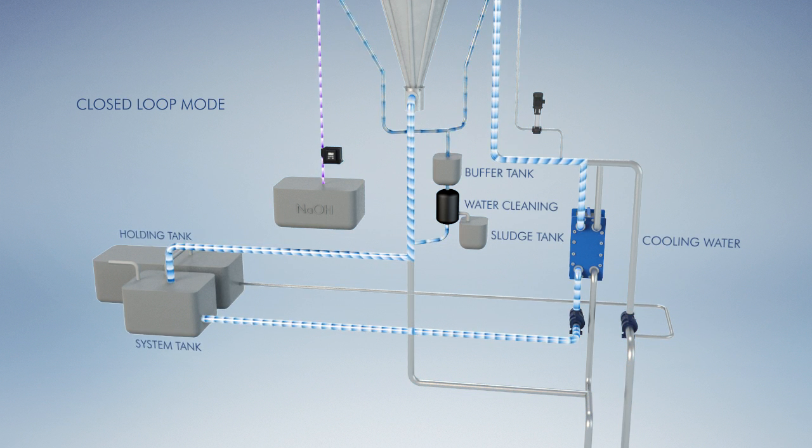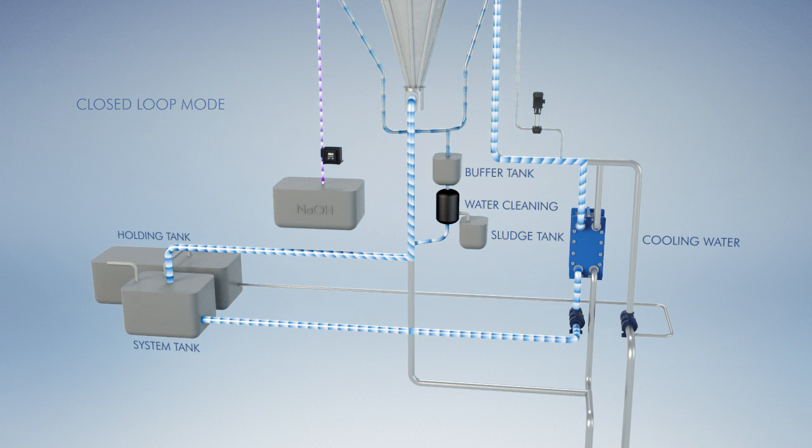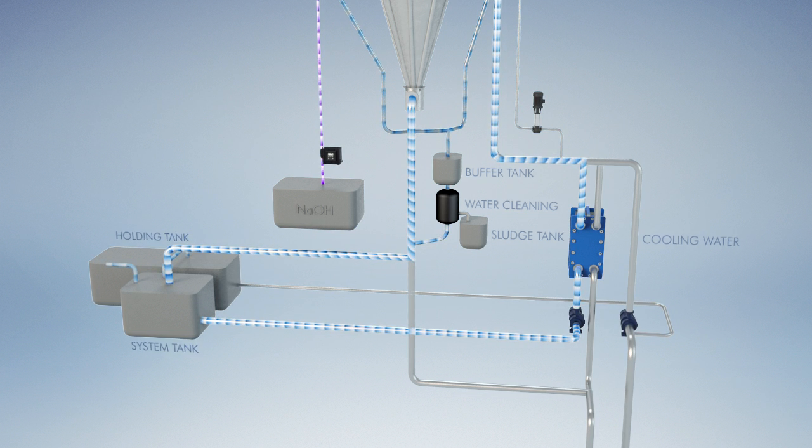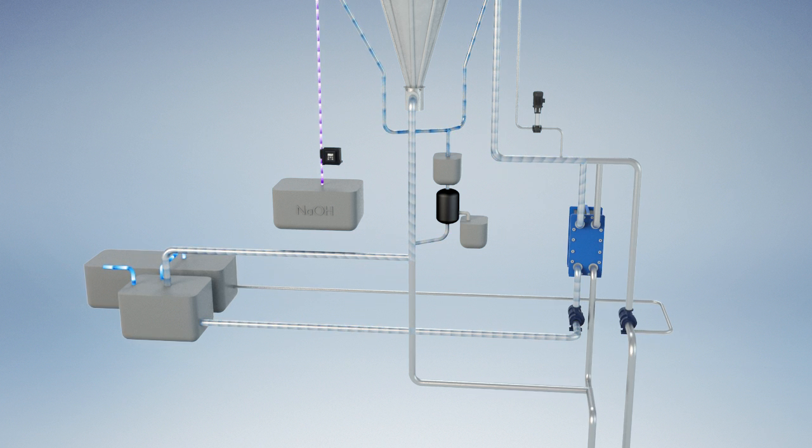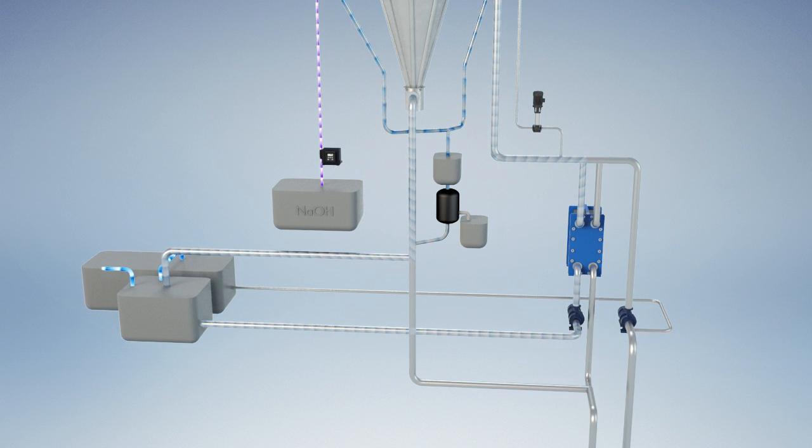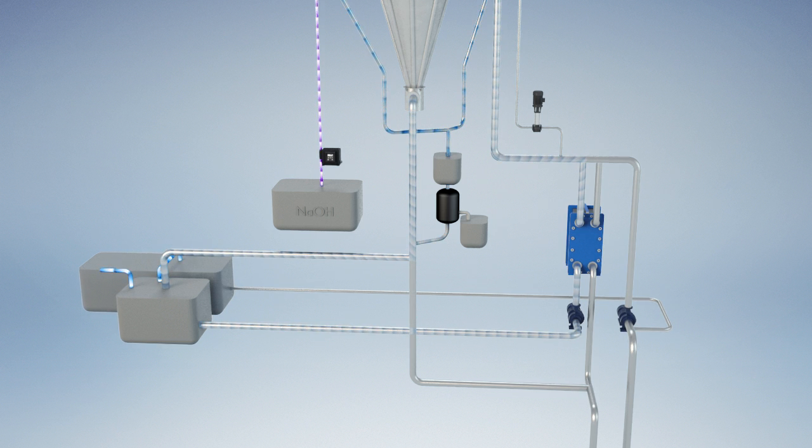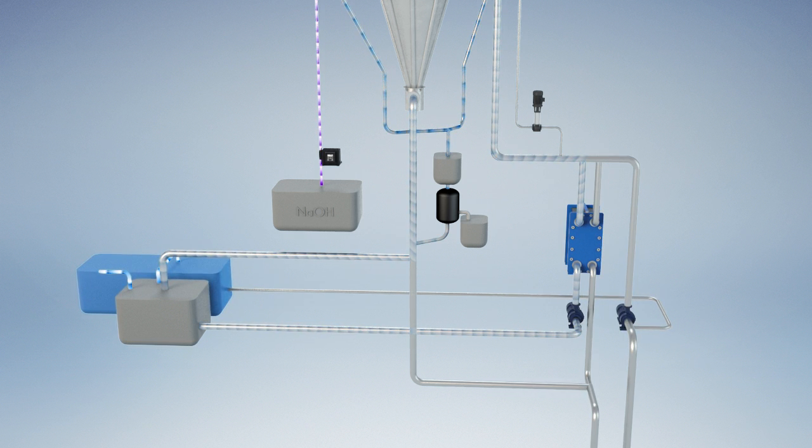The cleaning water dosed with caustic soda is then circulated through the system while a bleed and corresponding make-up stream ensures that saturation is avoided. The thoroughly cleansed bleed stream is led to a holding tank for later discharge to sea or ashore.